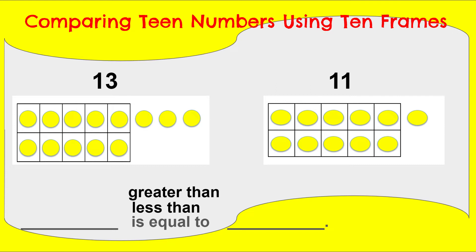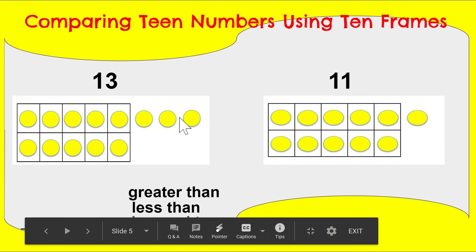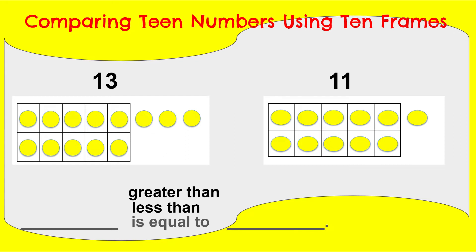I'm thinking 13 is not equal to 11 because they're not the same — they don't have the same amounts. So now I have to decide: is it greater than or less than? They each have one 10 frame all filled, so those ones would each have a partner. But then over here I have three extra, and over here only one extra. The number 13 is greater than the number 11. Let's say that all together: 13 is greater than 11. We hold our arms nice and wide and we say 13 is greater than 11.